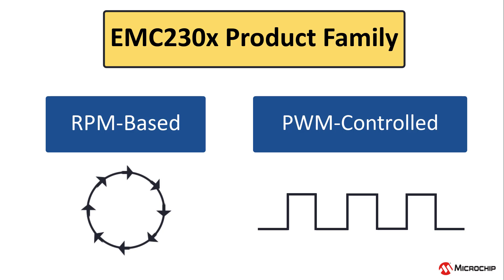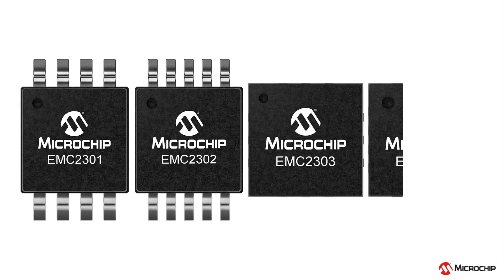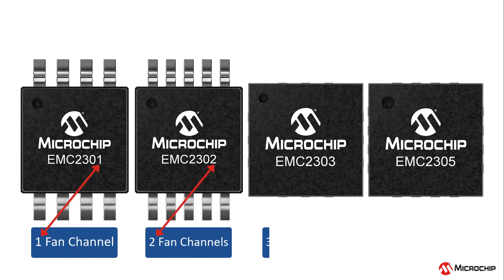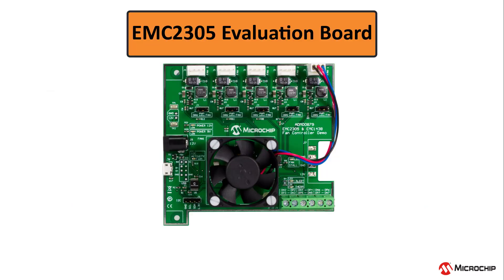They are the most accurate at controlling fans, with up to 0.5% accuracy from 500 RPMs to 16,000 RPMs. The 230X family consists of the 2301, 2302, 2303, and 2305, where the last number indicates 1, 2, 3, or 5 available fan channels. We'll mostly focus this video series on this family. The EMC 2305 has an evaluation board called the ADM00879.